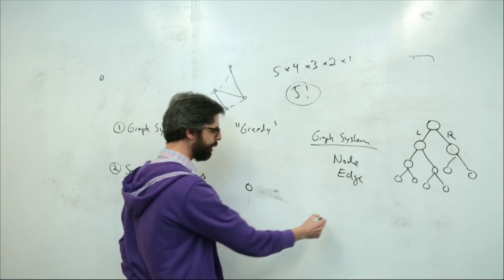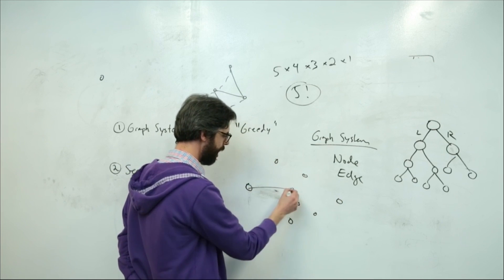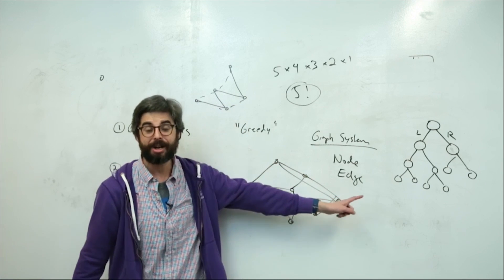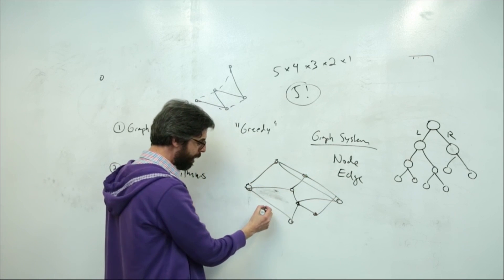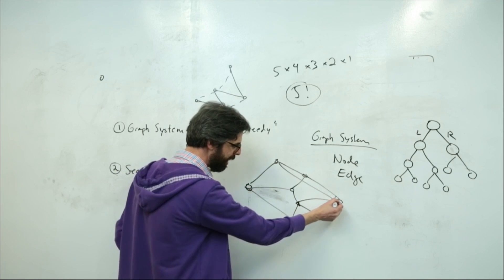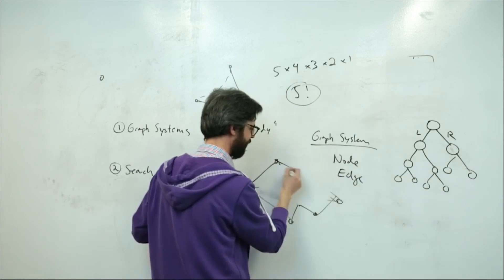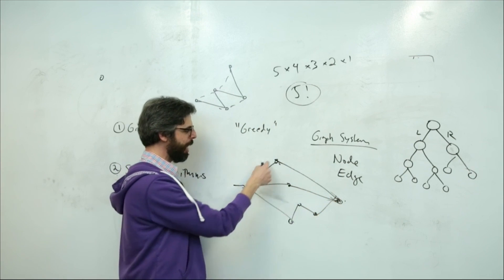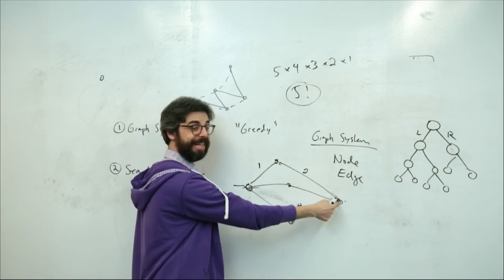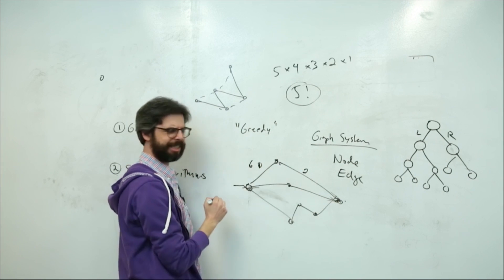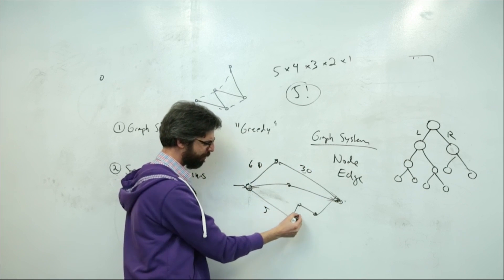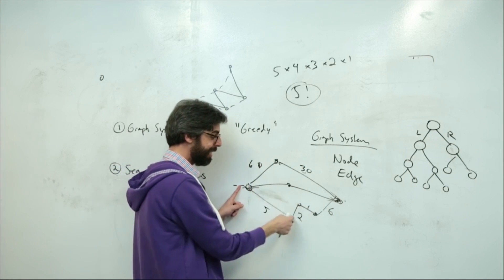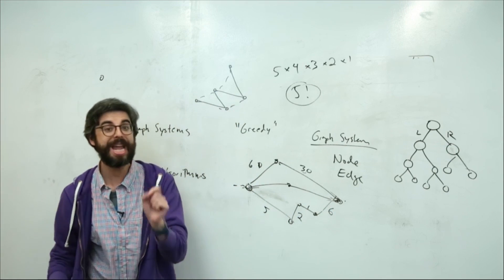A common example of a graph system similar to the traveling salesperson problem is a subway map. Let's say I need to get from this station to this station. There are all these other stations and routes, and many ways to get there, but they all take different amounts of time. Maybe I could take four trains — each with different durations — and even though it's four trains, it's optimal and gets me there faster. This is known as a weighted graph system.